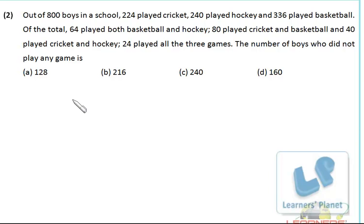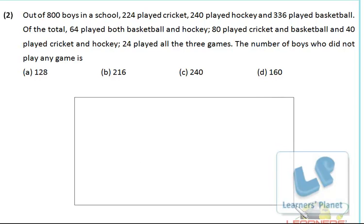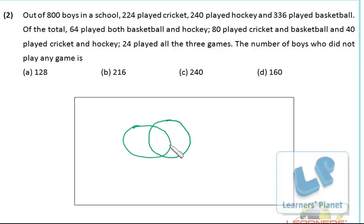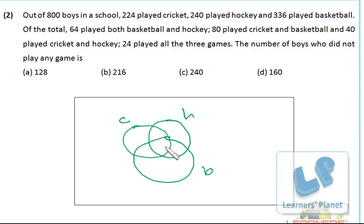This problem can be easily solved using Venn diagrams. I'll draw an entire set representing 800 students. Inside we have three circles — one for cricket, one for hockey, and one for basketball. Start filling from the center, which is the common portion among all three circles. Here 24 students played all three games, so I write 24 in the center.